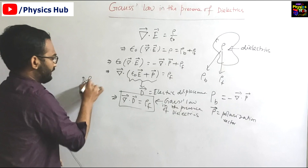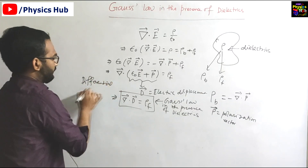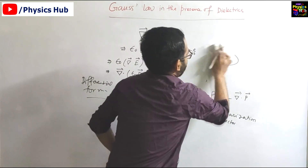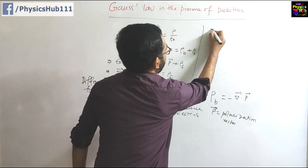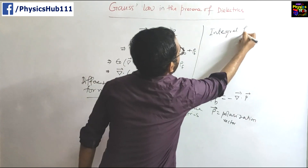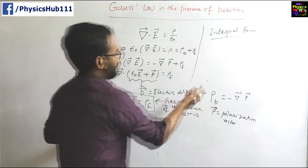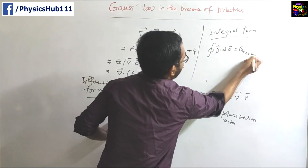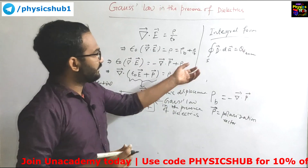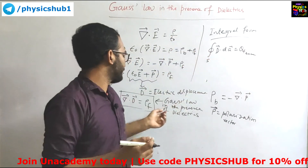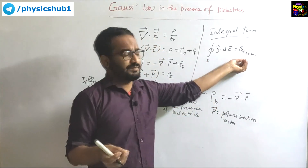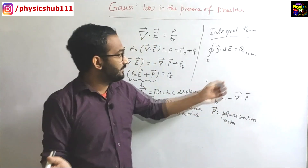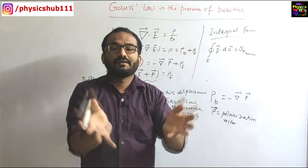This is the differential form. We can also write the integral form of it. The integral form is: the surface integral of D dot dA equals Q_f enclosed. Here D is the electric displacement, dA is an infinitesimal area element, and Q_f enclosed is the free charge enclosed inside the Gaussian surface.